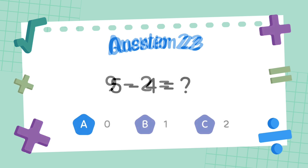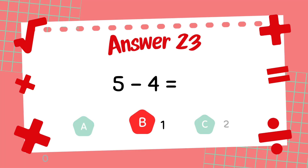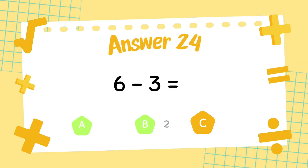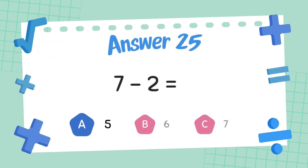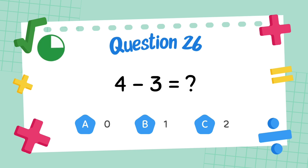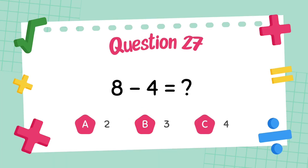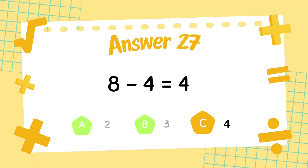The answer is 7. What is 5 minus 4? The answer is 1. What is 6 minus 3? The answer is 3. What is 7 minus 2? The answer is 5. What is 4 minus 3? The answer is 1. What is 8 minus 4? The answer is 4.